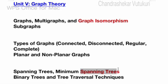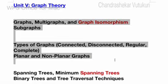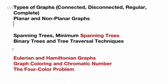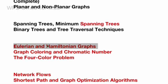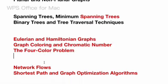Spanning trees — whichever I highlighted in red — are set as the topmost and gunshot questions. Binary trees and tree traversal techniques are set as topmost questions, and from this part you may be getting short as well as long in Unit 5. Eulerian and Hamiltonian graphs are set as the topmost question, chromatic number as the short question, and the coloring problem is also set as a long question.